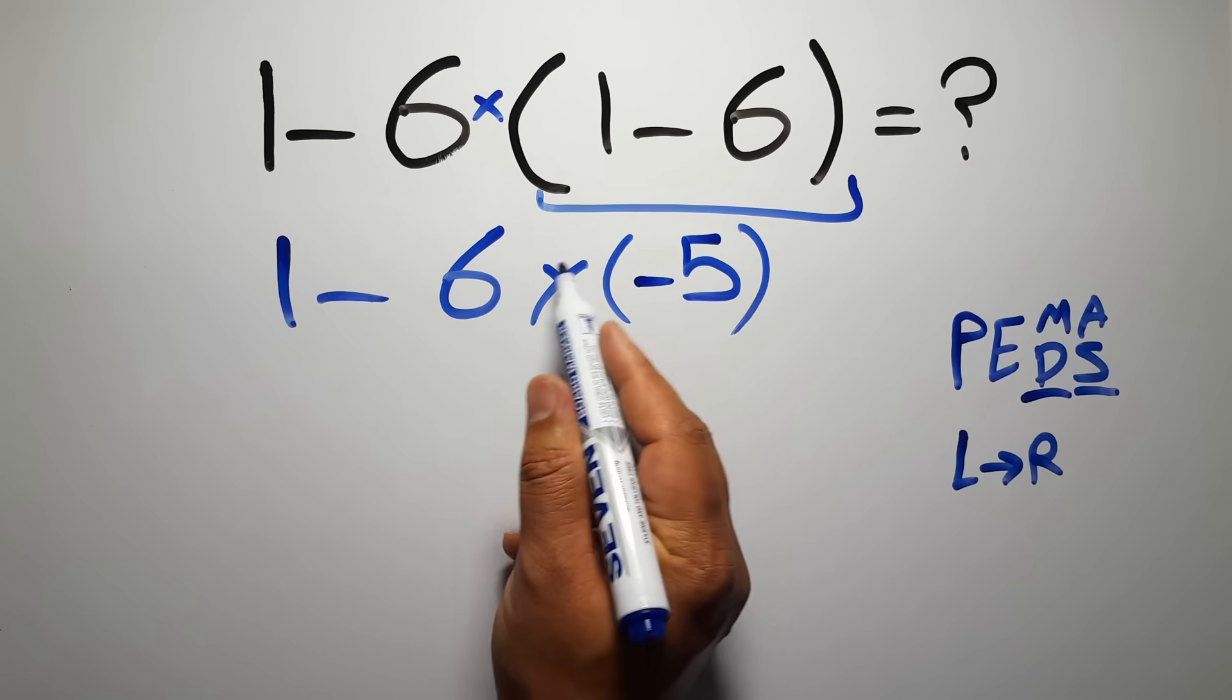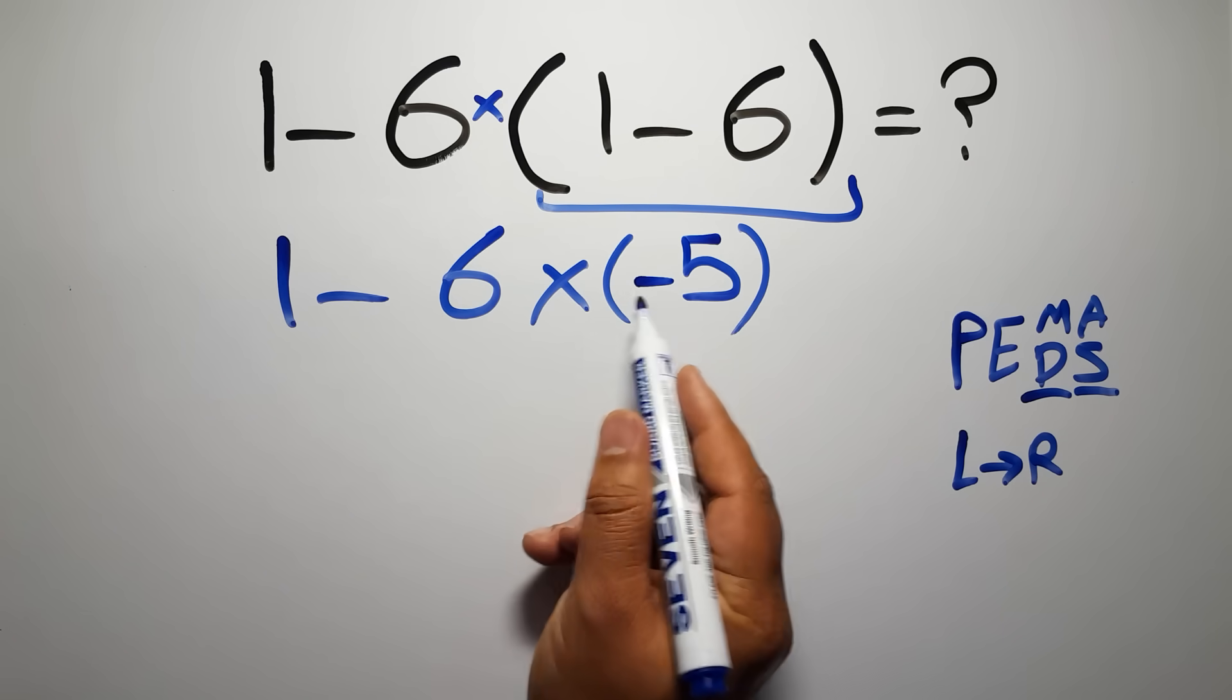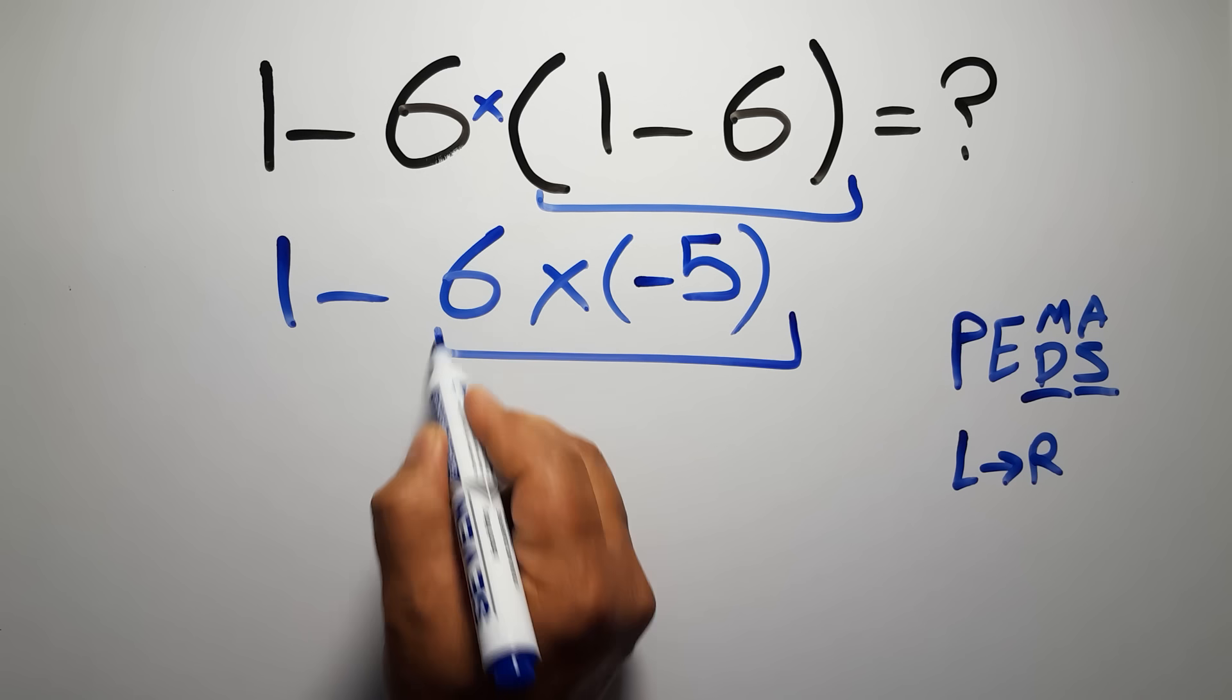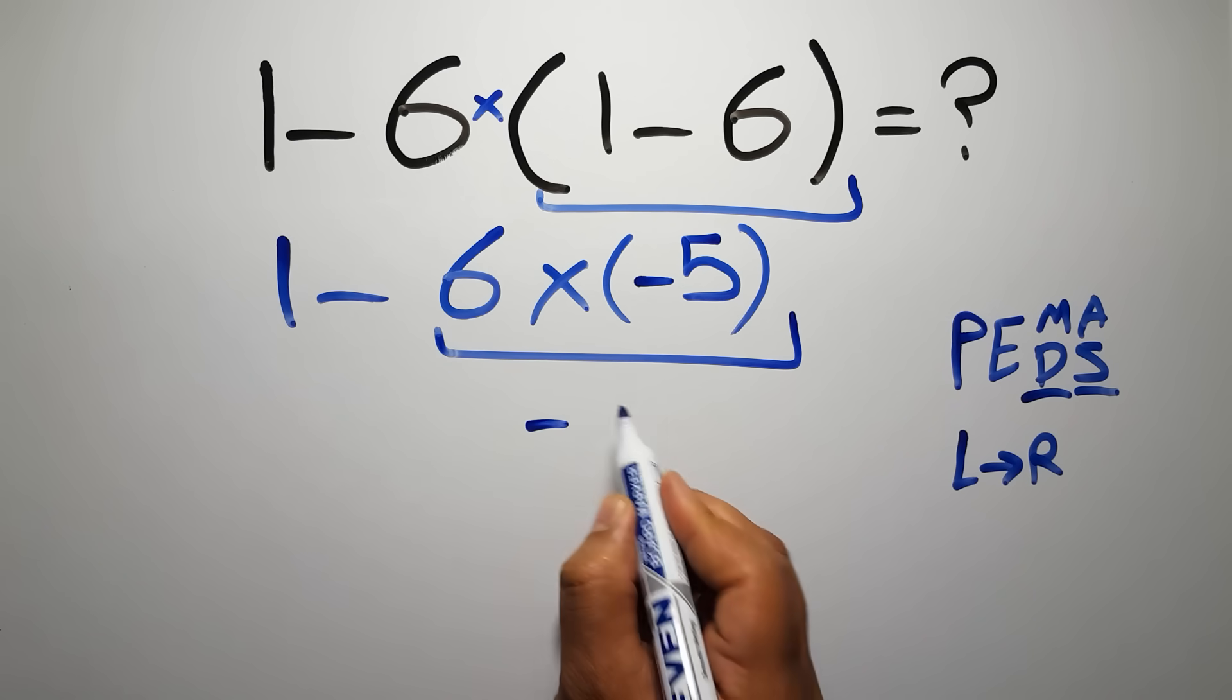So here first we have to do this multiplication. 6 times negative 5 gives us negative 30.